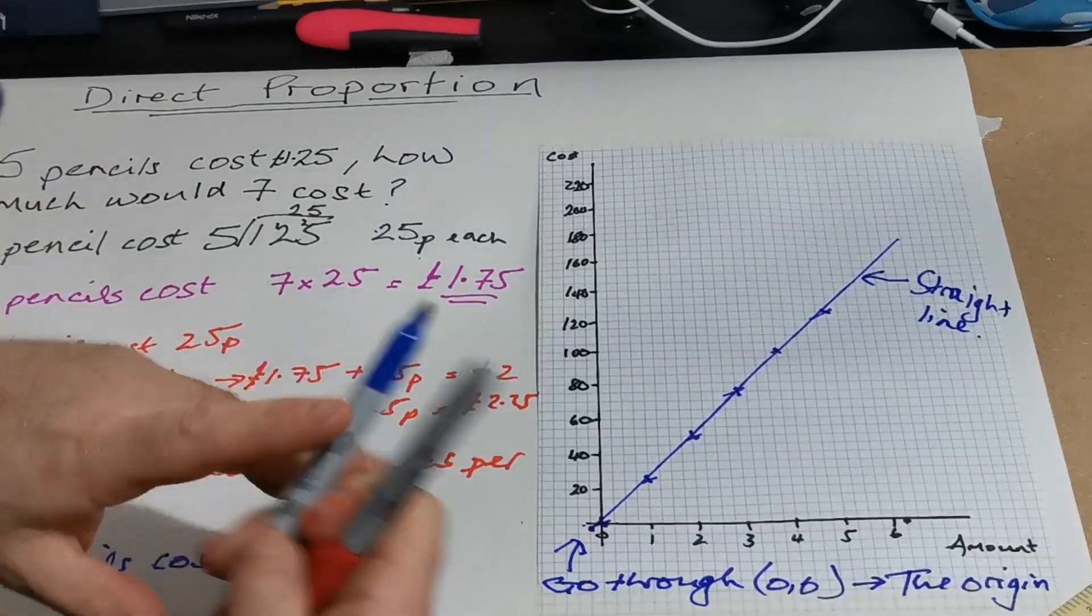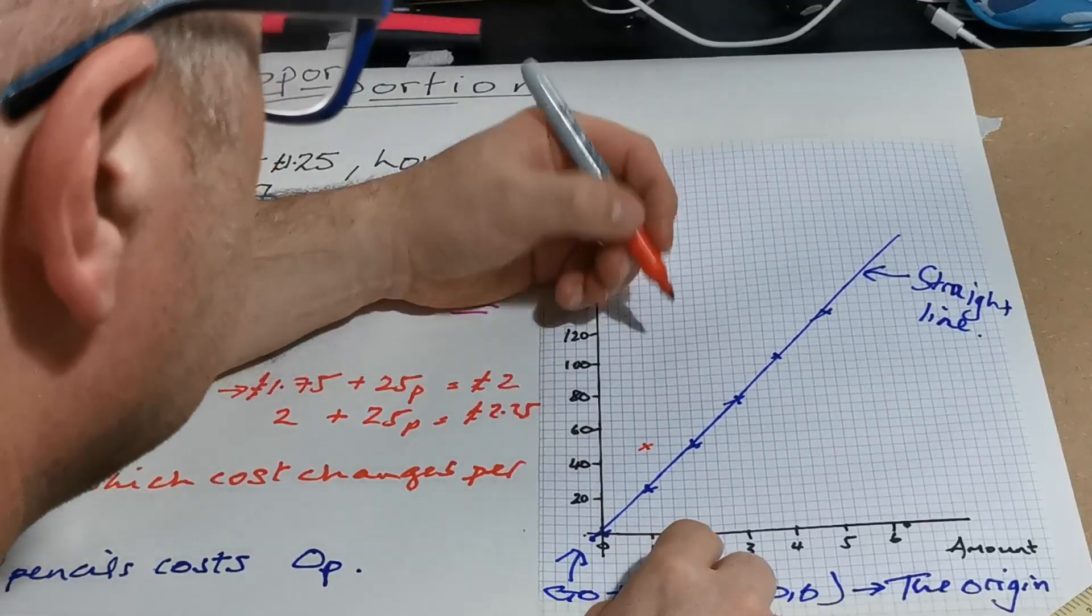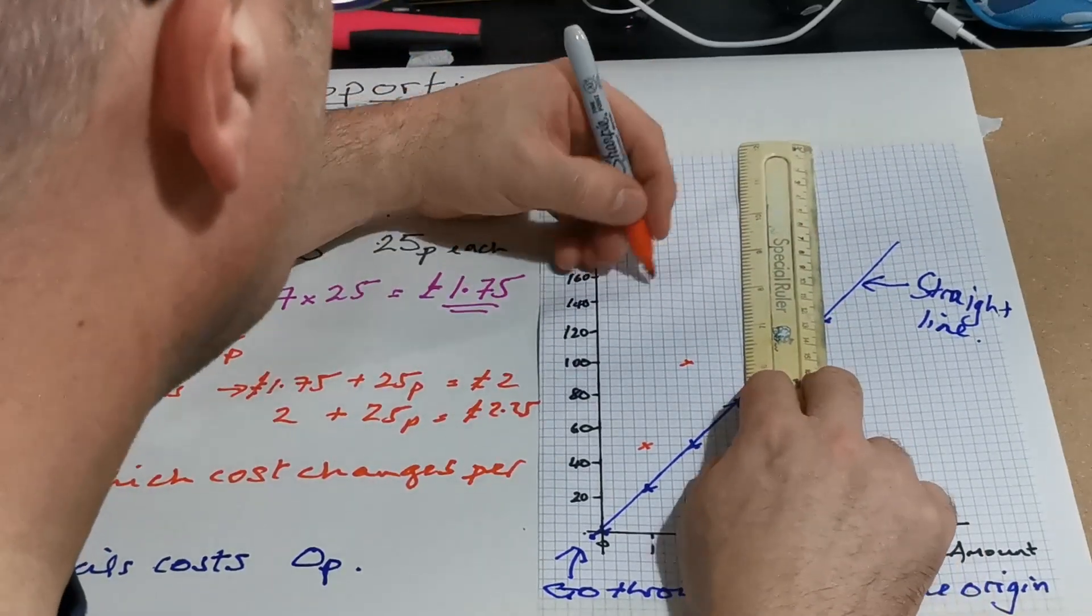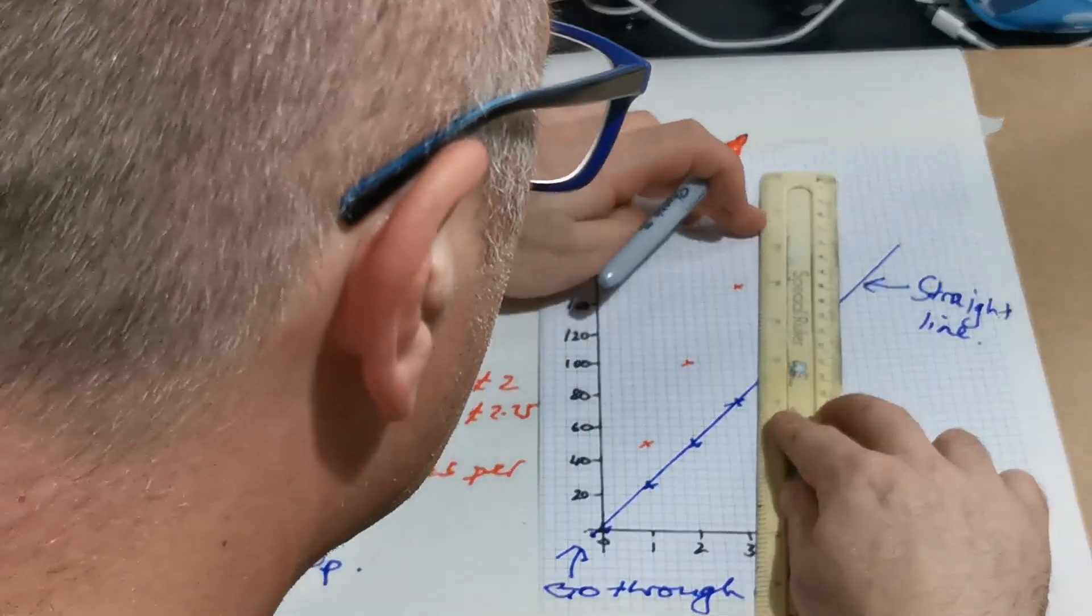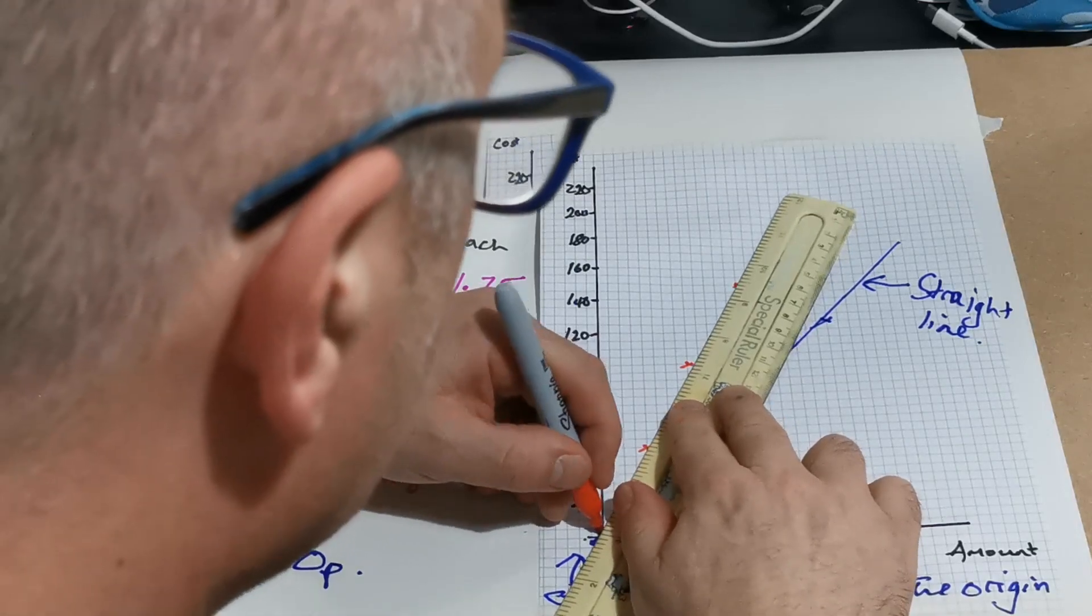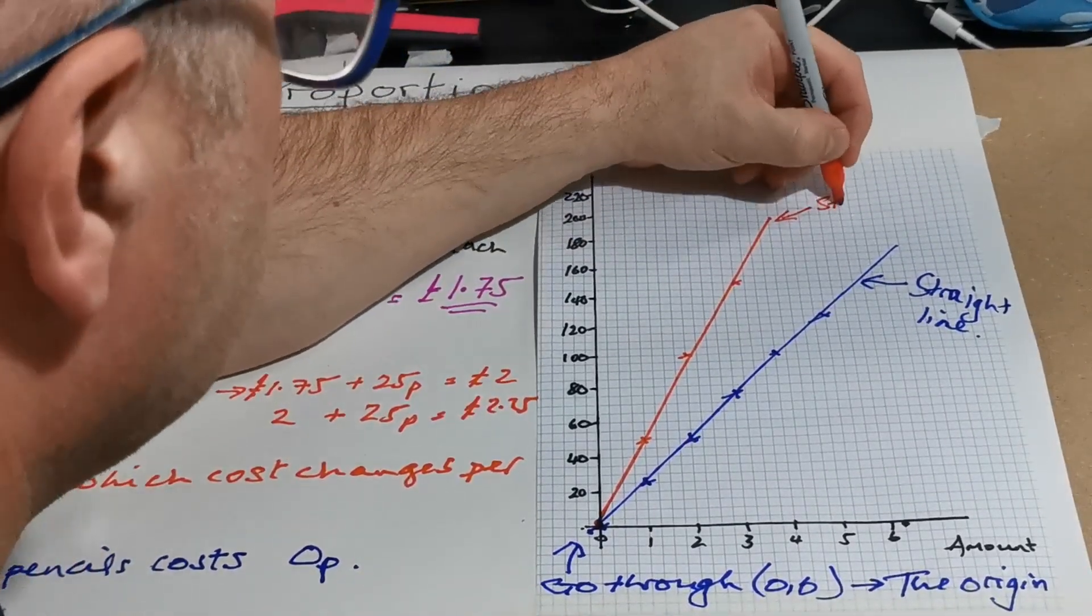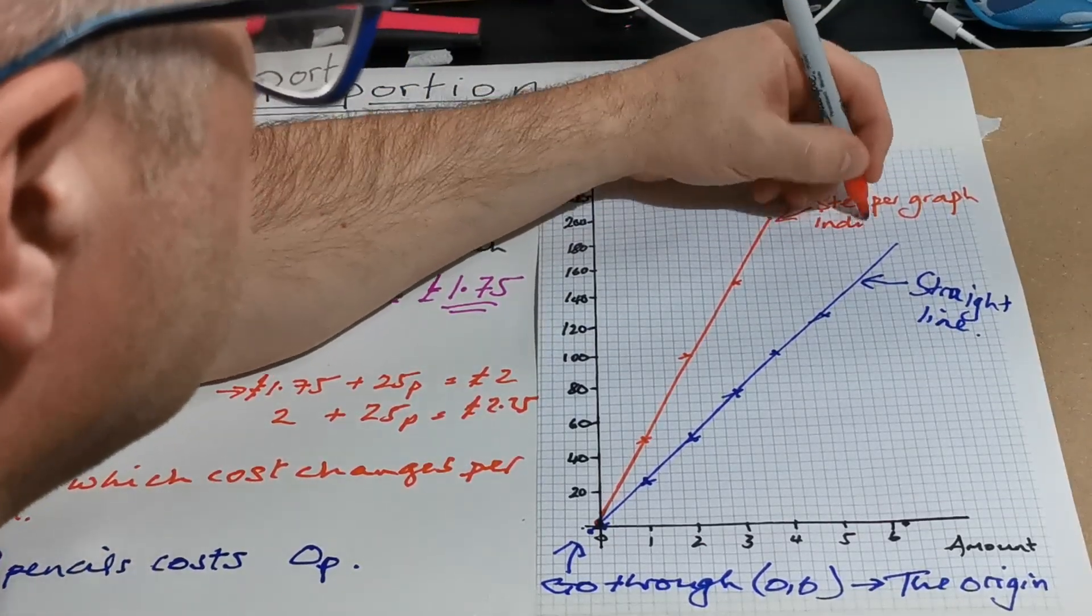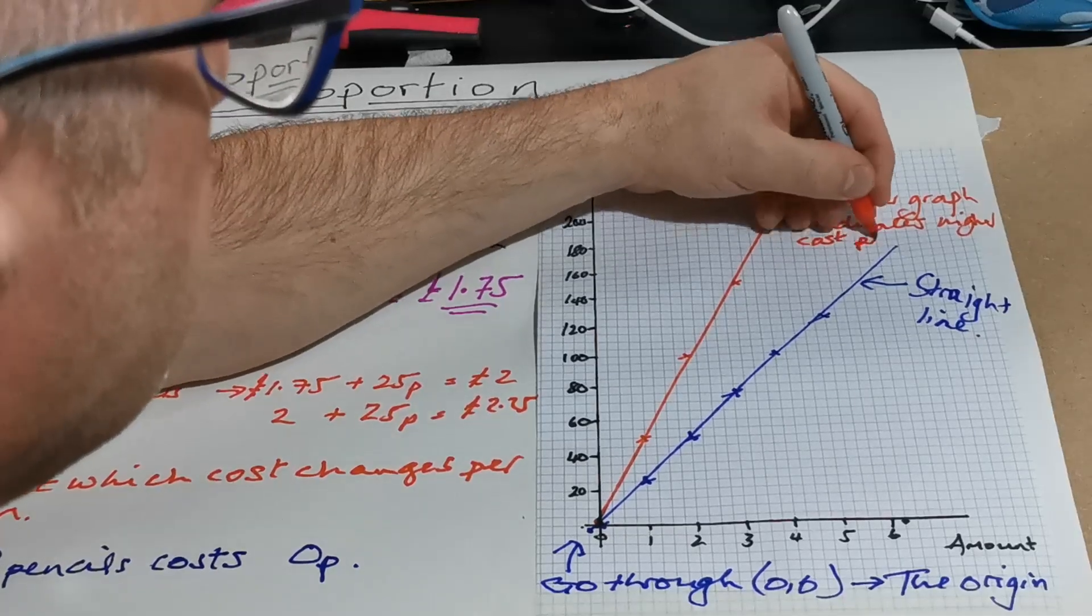Now things to notice about that line is, say I'd said that pencils cost 50p each. So I've got £1.50, £2.00, and £3.00. Obviously these would still get more. Still going a straight line through the origin. But a steeper graph. In this case it indicates higher cost per item.